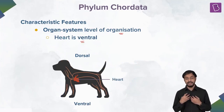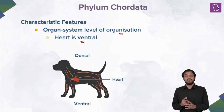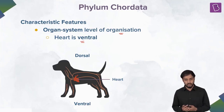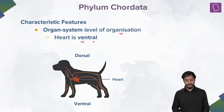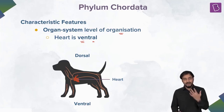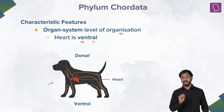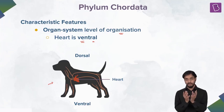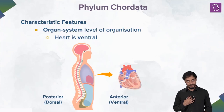The heart in chordates is ventral. What does ventral mean? Ventral means from the front or the lower part of the body. Dorsal means from the back or the upper part. These terms — ventral and dorsal — are very important in biology for understanding the position of organs in an organism. Our heart is ventral.